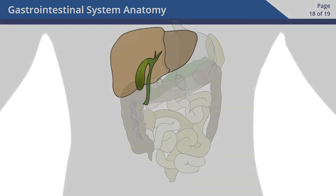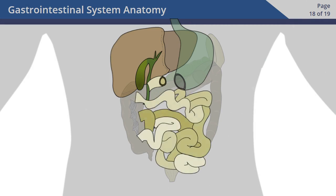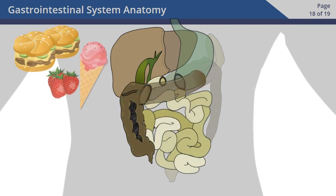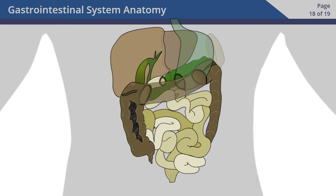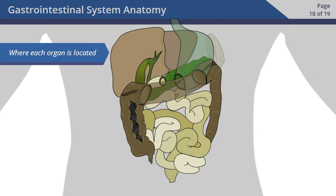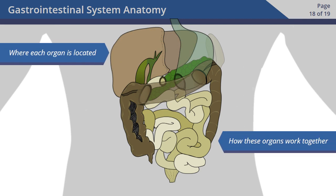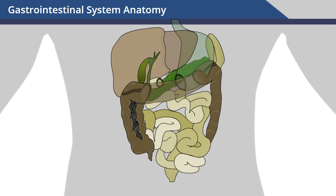Every organ in your gastrointestinal tract works together to help your body break down and process the food you eat. They turn food into water, minerals, and nutrients necessary for your survival. In this video, we explored where each organ is located and how they work together. This completes gastrointestinal system anatomy.